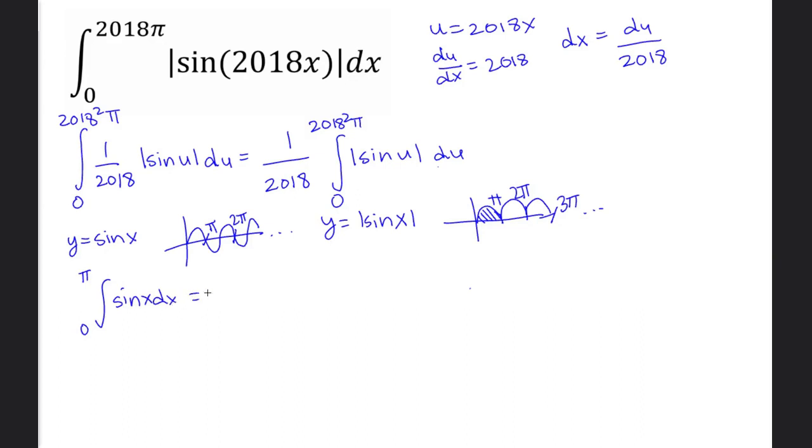This equals -cos x from 0 to π, which is -cos π - (-cos 0). This equals -(-1) - (-1), which equals 2.